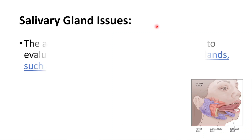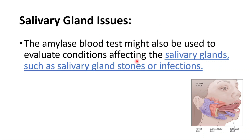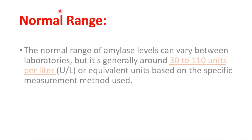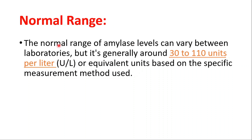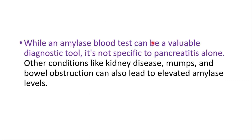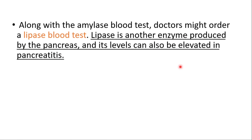Amylase might also be used to evaluate conditions affecting the salivary glands, such as stones or infections. The normal range for amylase can vary between laboratories, but it's generally around 30 to 110 units per liter, based on the specific measurement method used. While it can be a valuable diagnostic tool, it's not specific to pancreatitis alone — other conditions like kidney disease, mumps, and bowel obstruction can also lead to elevated levels.